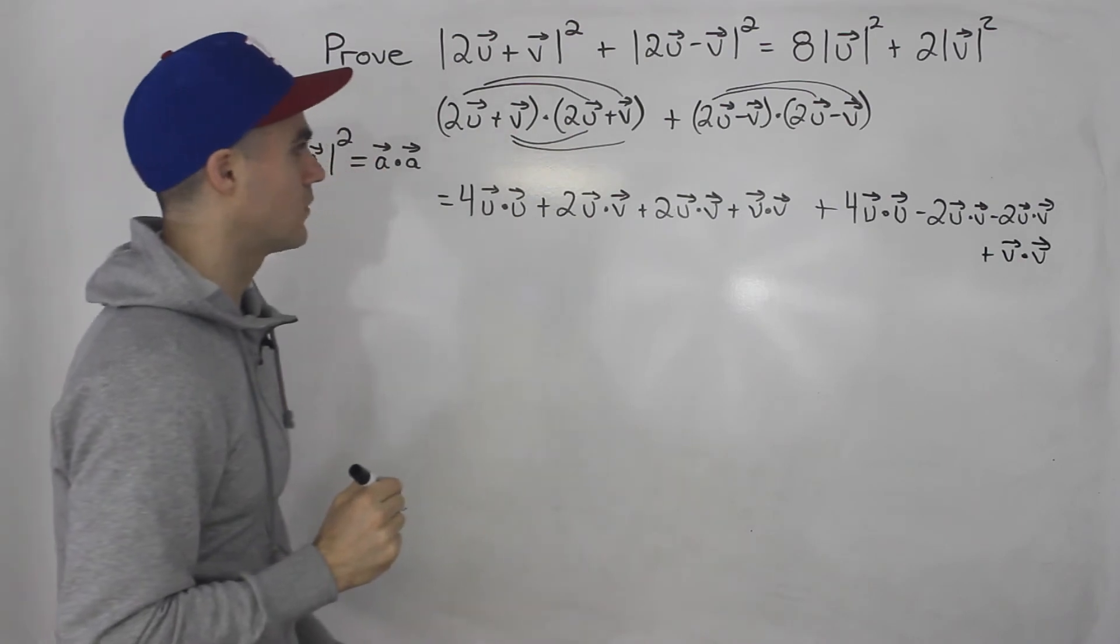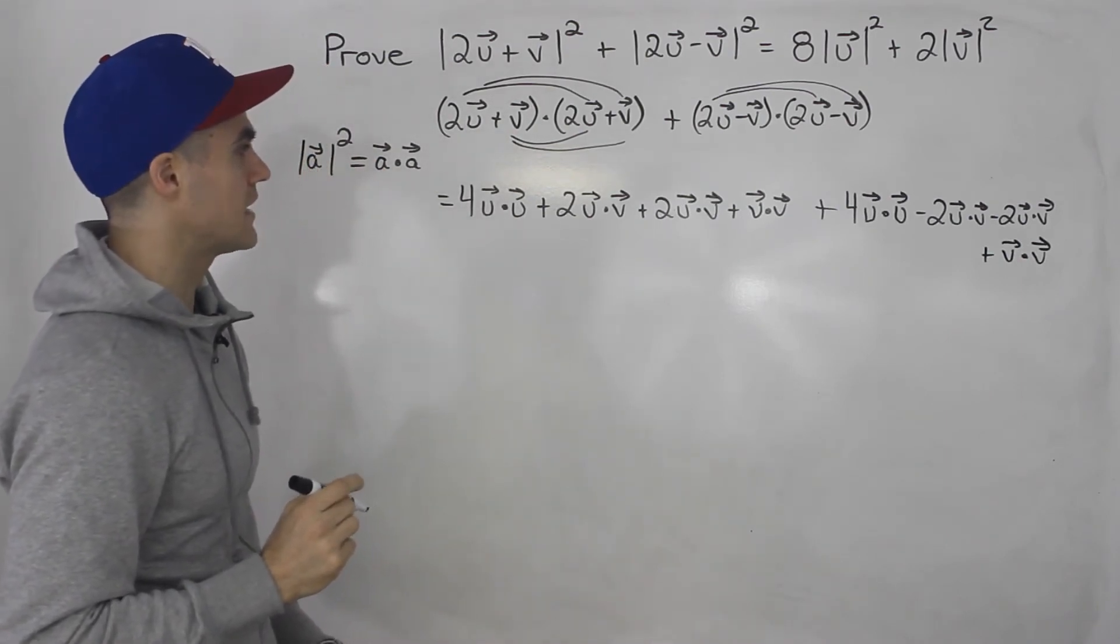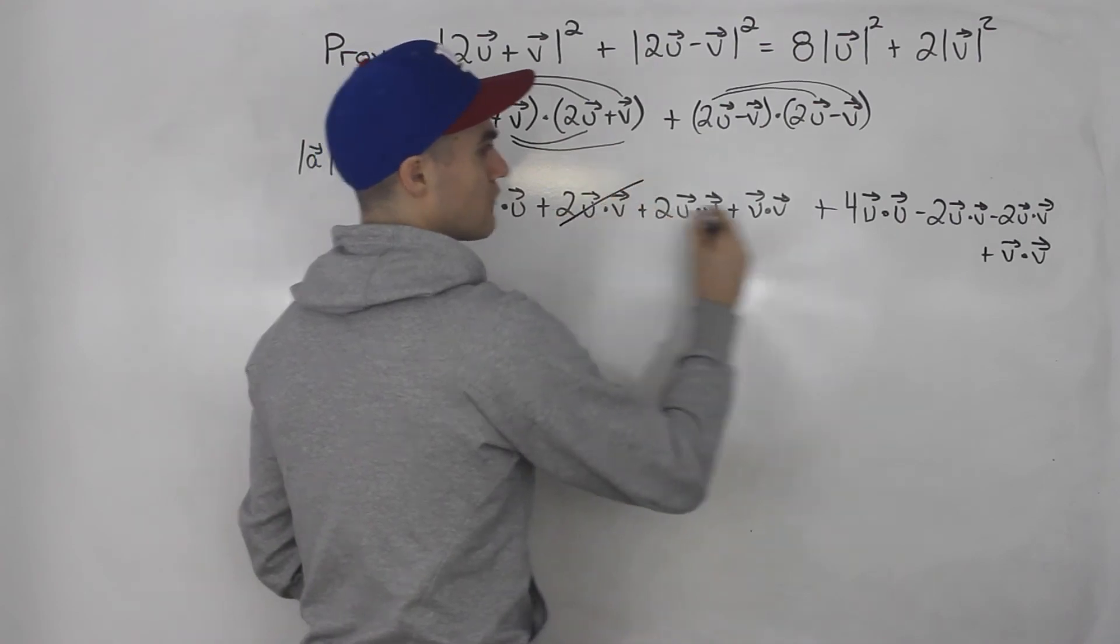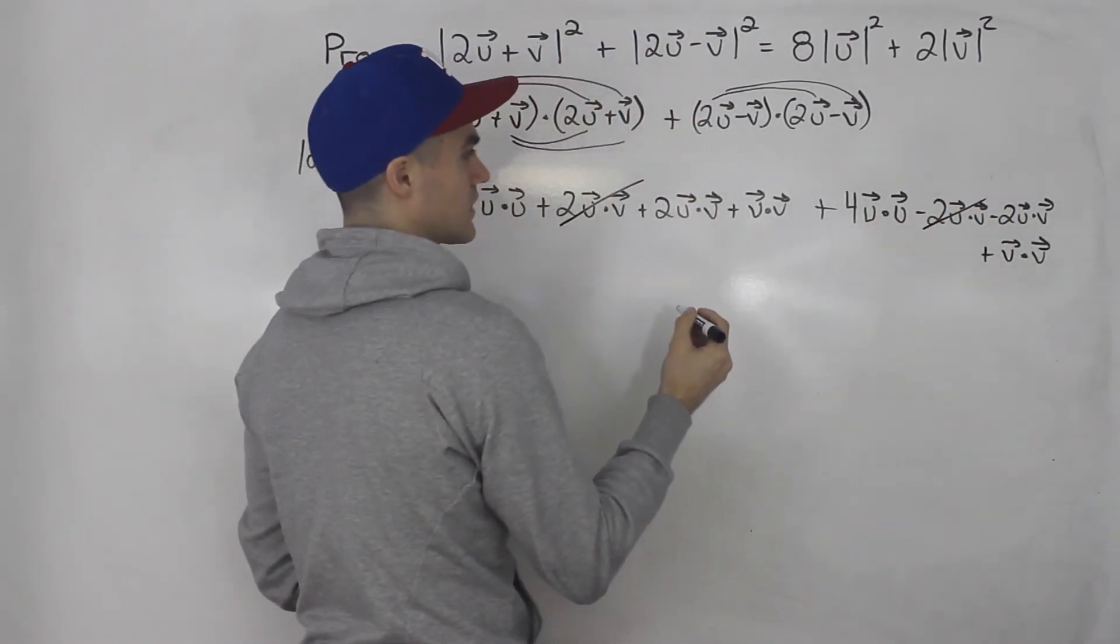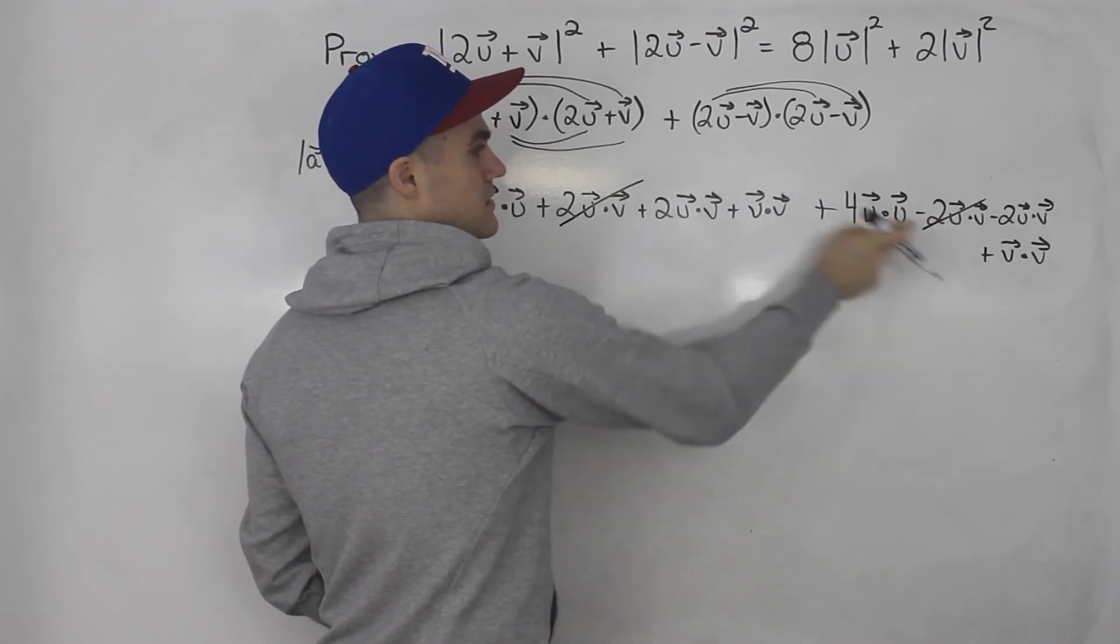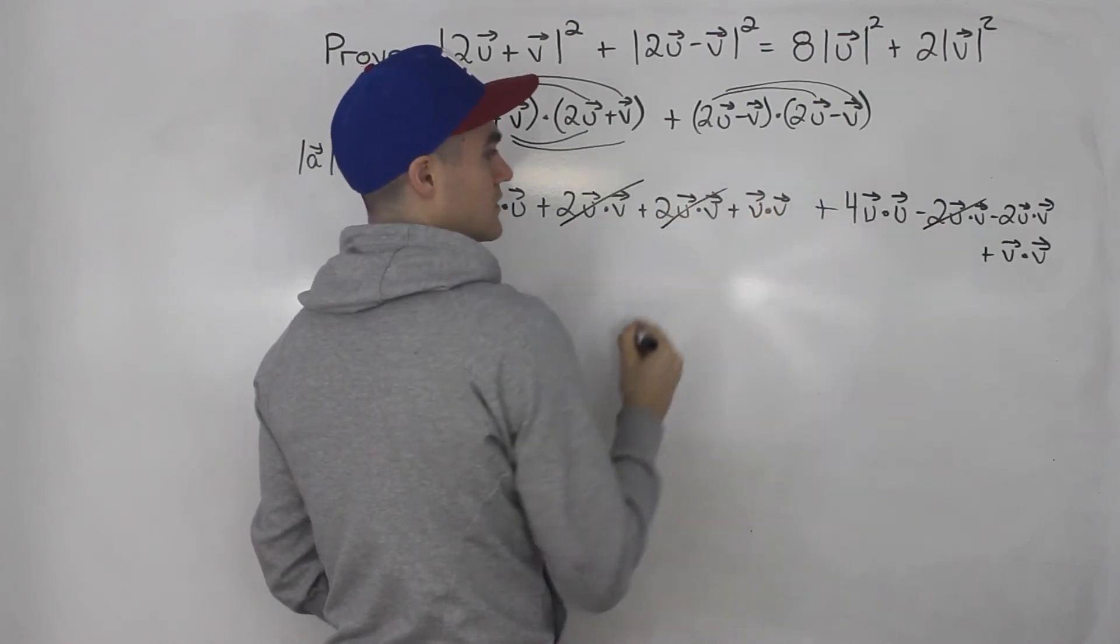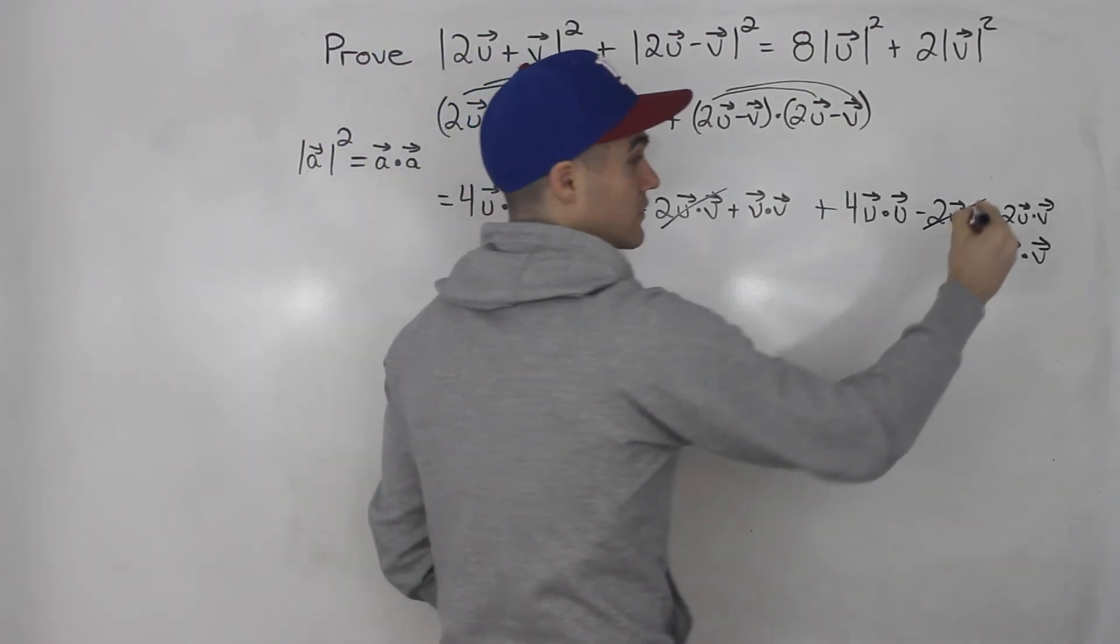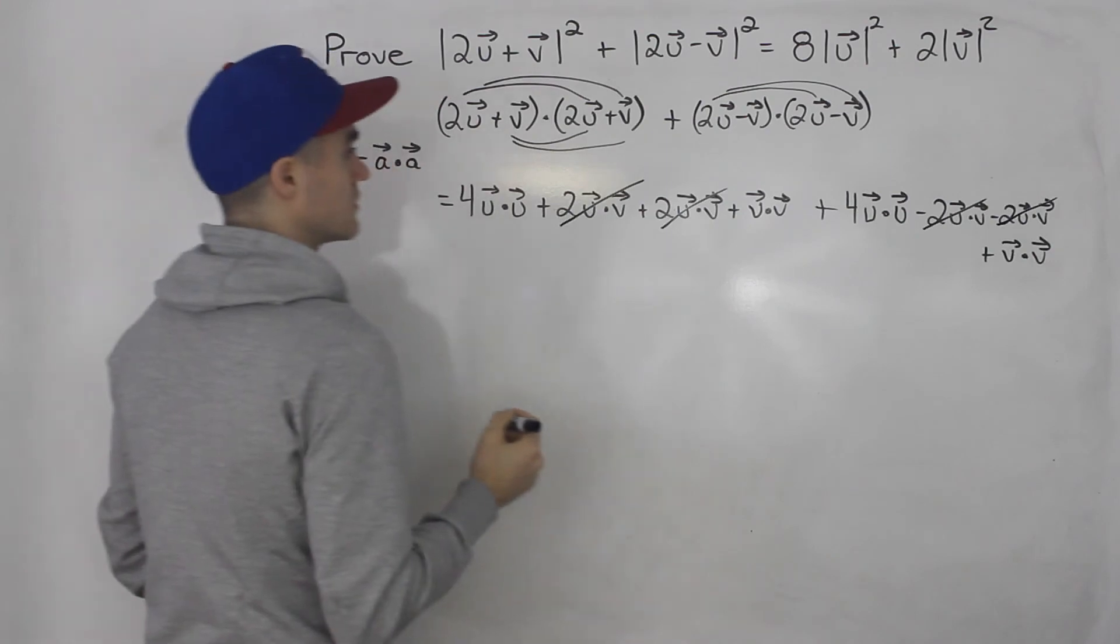All right, so quite a bit going on here. But what's nice about this is notice that this 2u dot vector v, this 2u dot vector v is going to cancel out. That's a minus 2u dot vector v. So 2 minus 2 cancels out. And then 2u dot vector v minus 2u dot vector v again. Those cancel out.